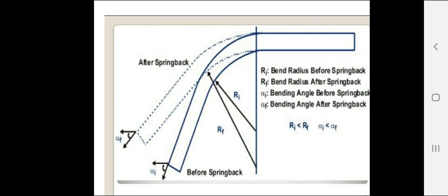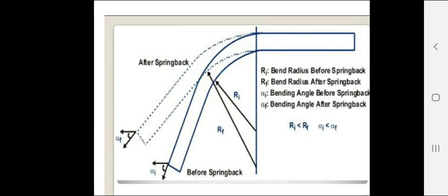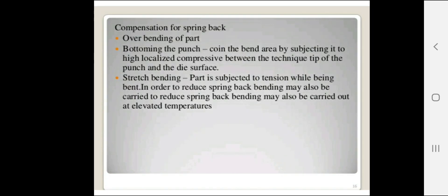The angle alpha-i is the bending angle before spring back and alpha-f is the bending angle after spring back, as seen in the figure. To compensate for spring back, bottoming the punch is used — this involves coining the bend area by subjecting it to high localized compressive stress between the tips of the punch and the die surface. Stretch bending is another method.